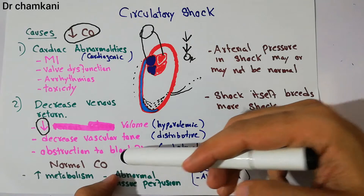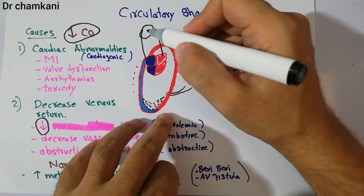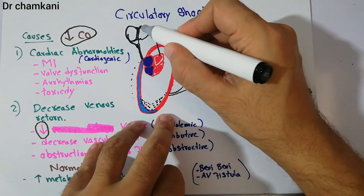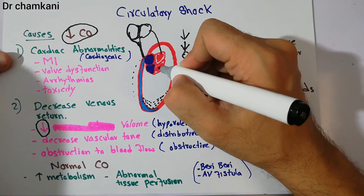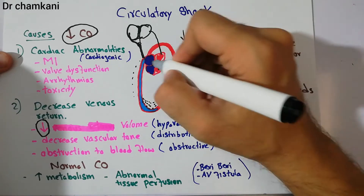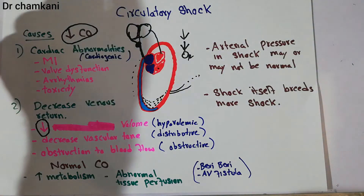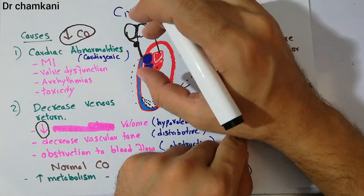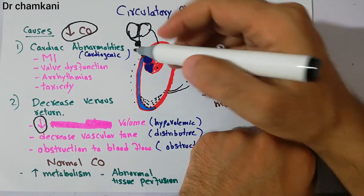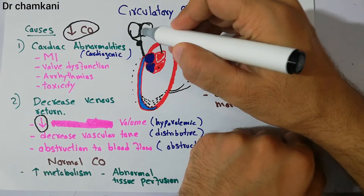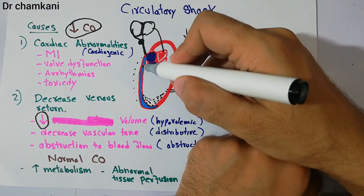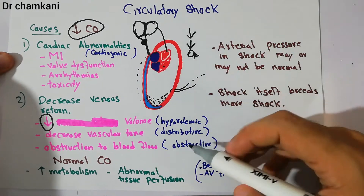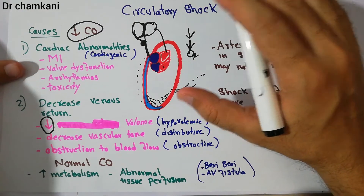A final category of decreased venous return is due to obstruction to blood flow. For example, a thrombus or clot can form in the heart and travel into the lungs causing a pulmonary embolism, obstructing blood flow. When circulation is blocked, blood cannot properly go into the lungs, there is no space for blood to return to the heart, and venous return decreases. This leads to obstructive shock. Thromboembolism is one kind of obstructive shock; this obstruction can also occur due to tumors or pneumothorax compressing blood vessels from outside.